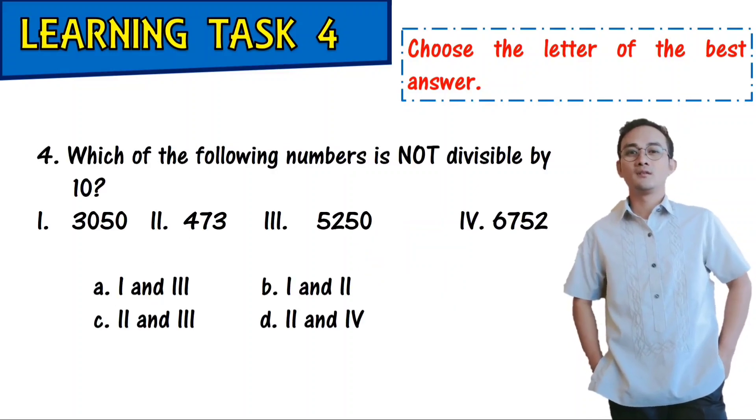Which of the following numbers is not divisible by 10? 1, 3050. 2, 473. 3, 5250. 4, 6752. A, 1 and 3. B, 1 and 2. C, 2 and 3. D, 2 and 4.